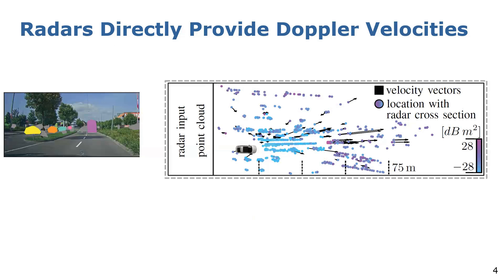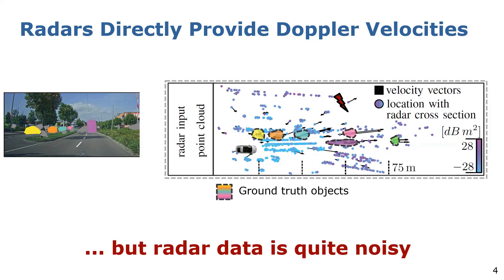Radar sensors overcome these limitations and directly provide the Doppler velocity, which enables the identification of moving objects in single scans. Furthermore, radar sensors provide radar cross-section values which depend on the surface, the material, and the shape of the object, which helps to differentiate between moving agents. A serious drawback, however, is that radar scans are largely affected by noise due to multipath propagation, egomotion, and sensor noise, indicated by measurements with Doppler velocities besides the actual instances, frequently leading to false positives and limiting performance.